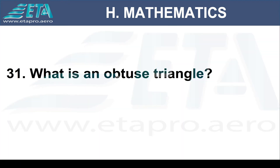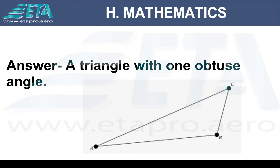What is an obtuse triangle? A triangle with one obtuse angle.